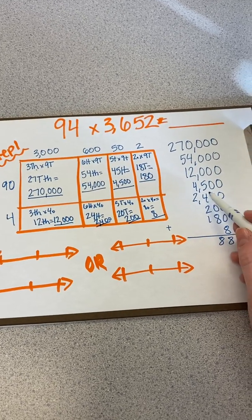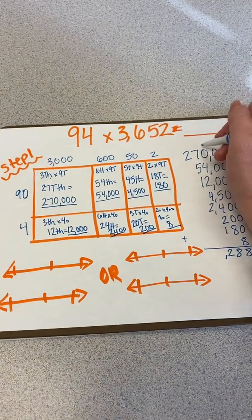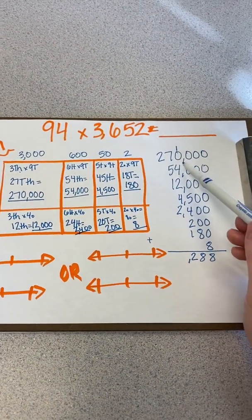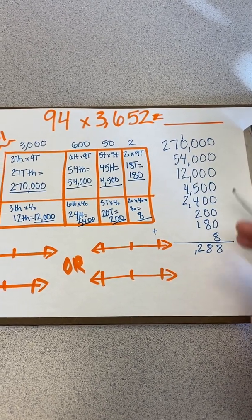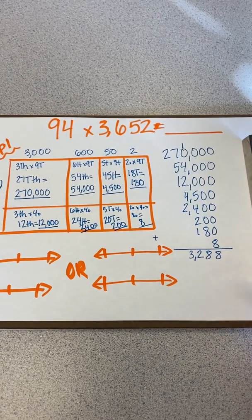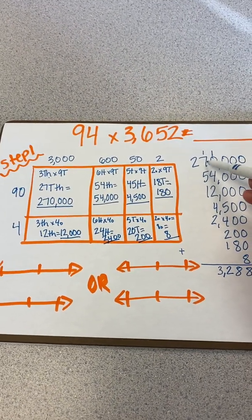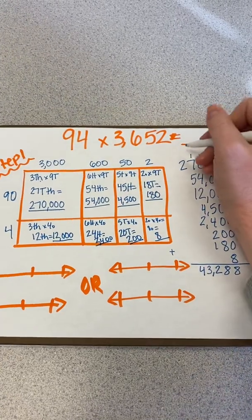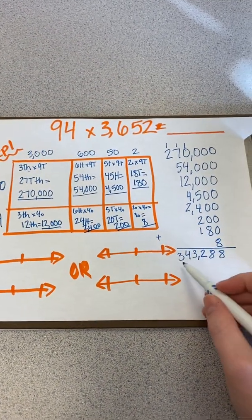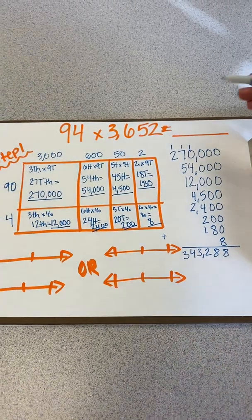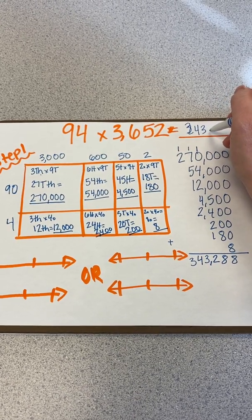1 and 4 is 5 and 5 more is 10 and 2 more than that is 12. So I'm going to put my 2 hundreds here and regroup the other 10 to become 1,000. I have 4 and 1 more than that is 5 and 4 more than that is 13 thousands. So I'm going to keep 3 of my thousands and regroup the other 10 to become ten thousand. 5 and 2 more than that is 7. 7 and 7 is 14. So I have 14 ten thousands. So I'll regroup 10 of those to become hundred thousand. 2 and 1 is 3. So I have 343,288 as my product of 94 times 3,652.